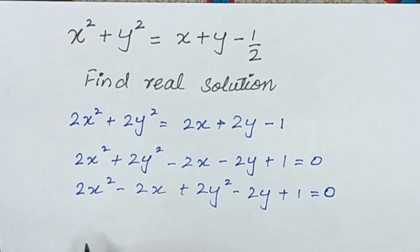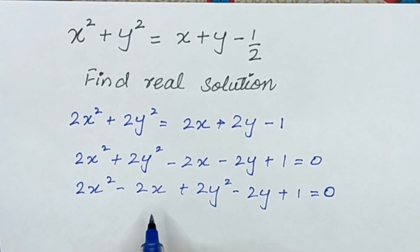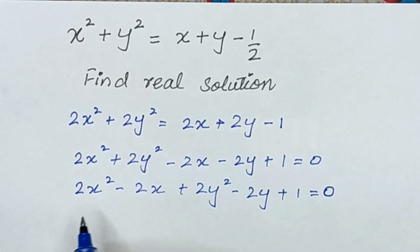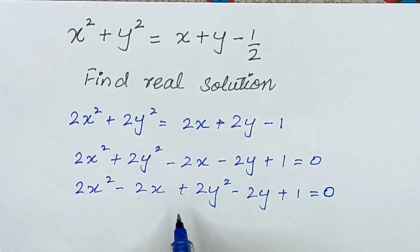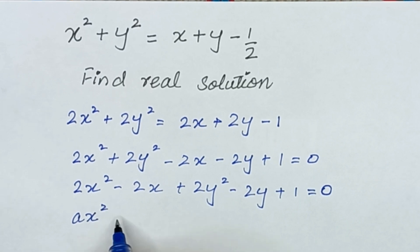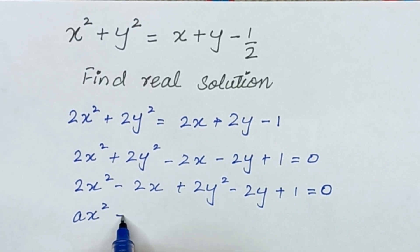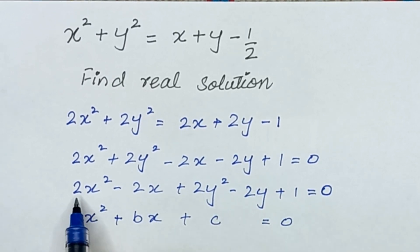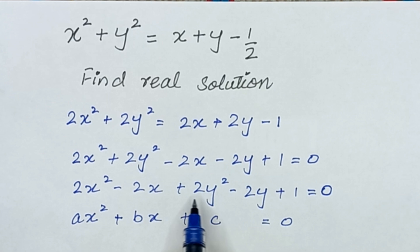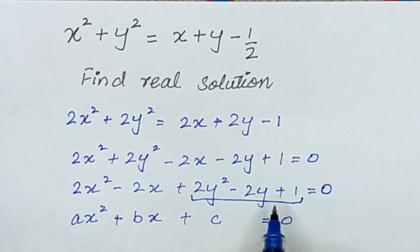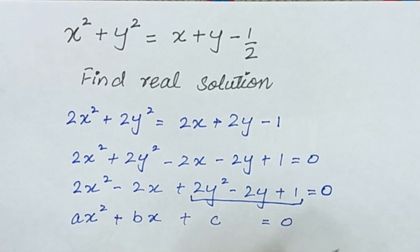Now it can be written as a quadratic equation in terms of x and also in terms of y. I will choose x here. Comparing with the general form of a quadratic equation ax² + bx + c = 0, in this case a = 2, b = -2, and the constant term c = 2y² - 2y + 1.